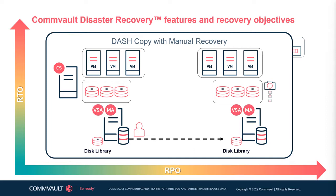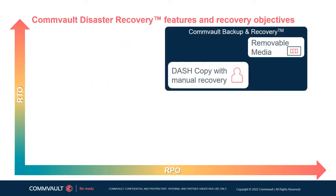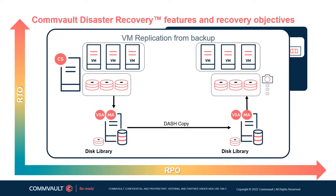Now we'll look at the three replication modes offered by Commvault Disaster Recovery. The first mode uses backup data from source VMs to create VMs at one or more destination sites. VM replication is typically deployed using a dash copy, whereby the destination is created from a full backup and then updates from incremental backups are applied to keep the destination VMs in sync. In cases where corruption on the source VM is replicated to the destination VM, users can still recover a point-in-time version from older backups.